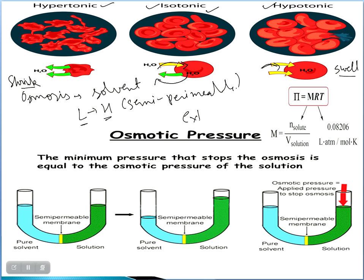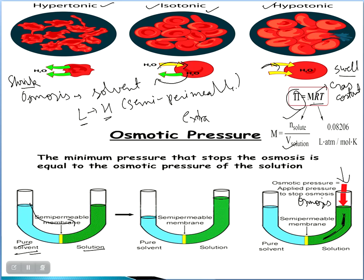Osmotic pressure is the extra pressure we have to apply to stop osmosis. You can see here: a semi-permeable membrane separates pure solvent and solution. If solvent is moving through the membrane, we apply pressure on the solution side to stop osmosis — that is the osmotic pressure, represented by π. The formula is π = MRT, where M is molarity (moles of solute per litre of solution), R is the gas constant (0.0821 L·atm/mol·K), and T is temperature.